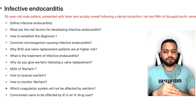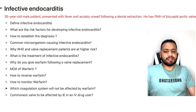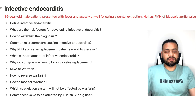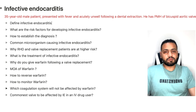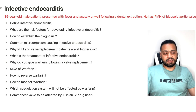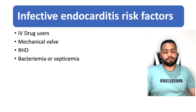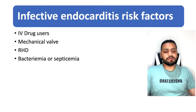The examiner is going to ask you a few questions. The first question is about the definition of infective endocarditis, and the answer is that it is an inflammation of the endocardial surface and the heart valves in a predisposed person by certain microorganisms. The next question asks about risk factors, which include rheumatic heart valve, bicuspid aortic valve, mechanical or prosthetic valve replacement, IV drug users, and severe bacteremia.